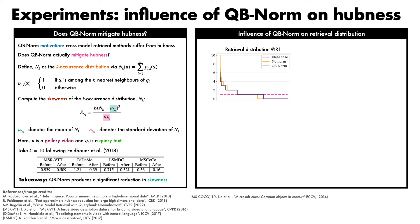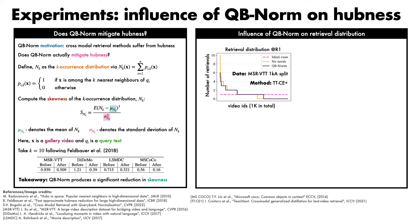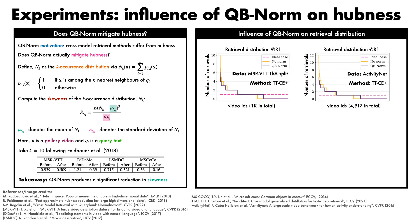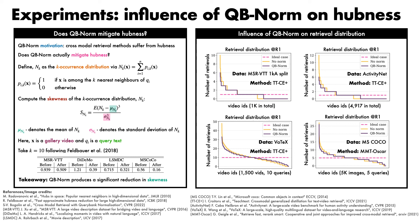We can also look at the influence of QB norm on the retrieval distribution for recall at 1. With video IDs ranked by their retrieval frequency on the x-axis and the number of retrievals on the y-axis, for MSRVTT 1K-A split with TeachText CE plus, the pink dashed horizontal line shows the retrieval distribution of an ideal method, while the yellow line shows the baseline without QB norm. We see that the purple line, indicating the retrieval distribution using QB norm, shifts closer to the ideal case. We find a similar effect when considering video retrieval on either ActivityNet or Vatex, as well as when performing image retrieval on MSCoco with the MMT OSCAR retrieval method.